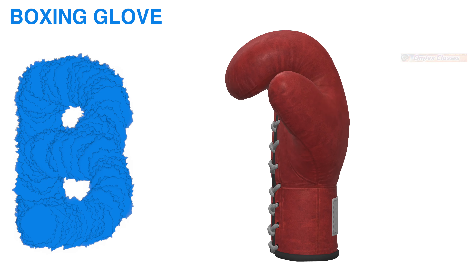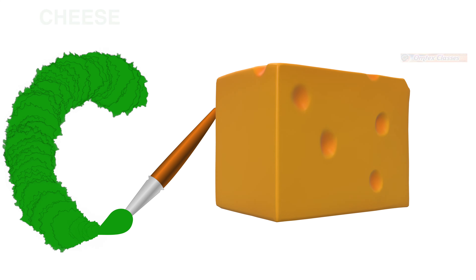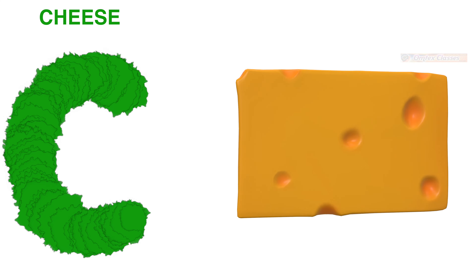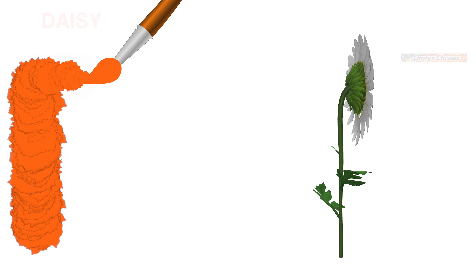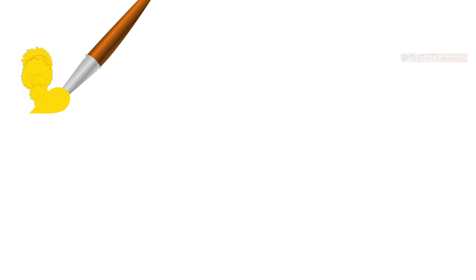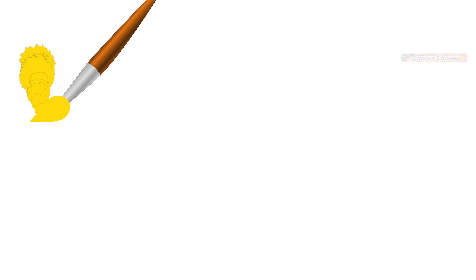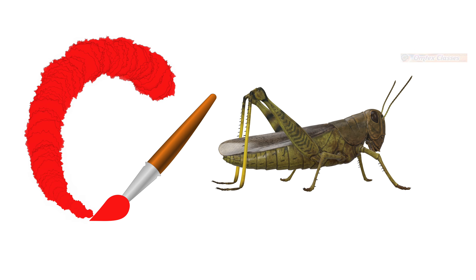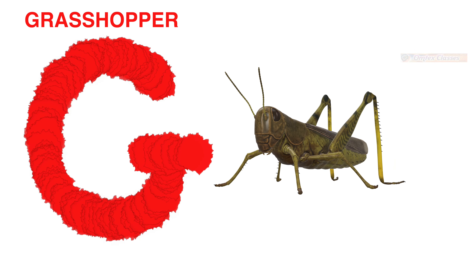A for apple tree, B for boxing globe, C for cheese, D for daisy, E for N, F for frog.